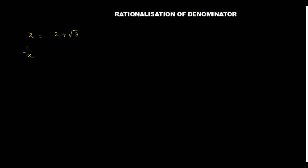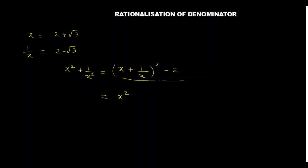Now let's understand the second method. x is equal to 2 plus root 3 is given, and we have found out 1 by x equals 2 minus root 3 from the first method. Now we will write x square plus 1 by x square in a different form. We write it as x plus 1 by x whole square minus 2. How did we do it? We have x square plus 1 by x square, and we add and subtract 2.